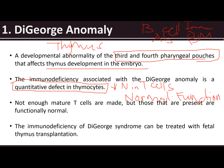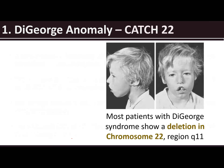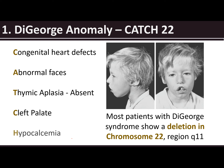The immunodeficiency of DiGeorge syndrome can be treated with fetal thymus transplantation. Most patients with DiGeorge syndrome show a deletion in chromosome 22, region Q11. Please remember the acronym CATCH-22 — C for congenital heart defect, A for abnormal facies, T for thymic aplasia or absence of the thymus, C for cleft palate, and H for hypocalcemia.